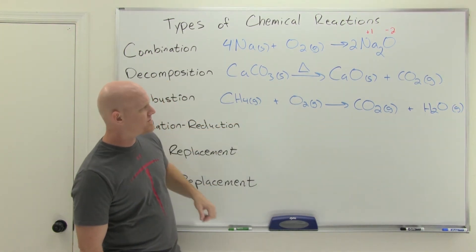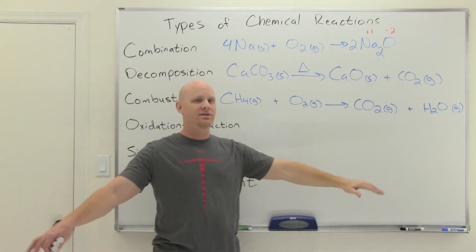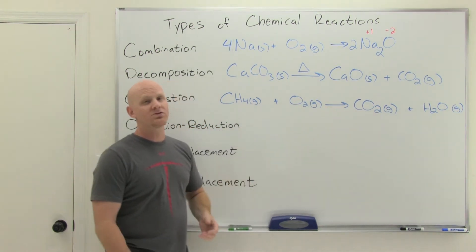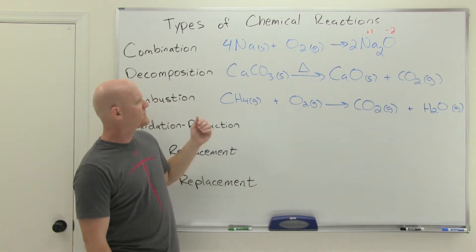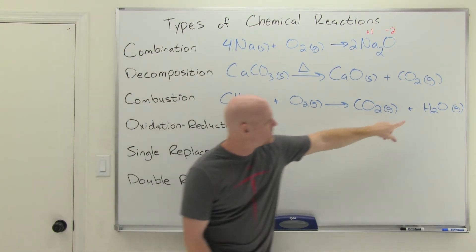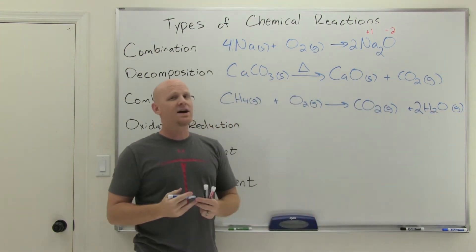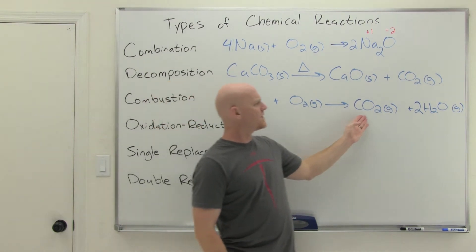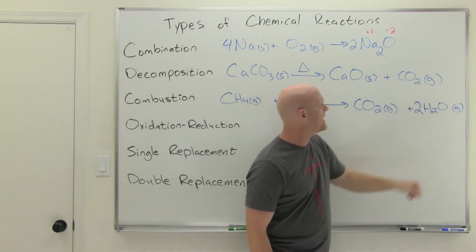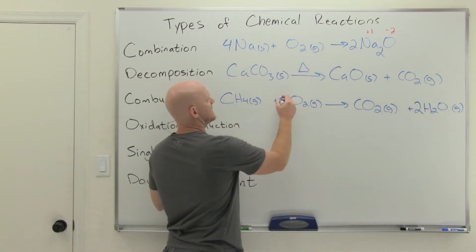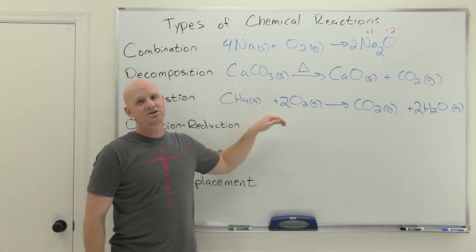When balancing combustion, oxygen shows up in two places on the product side, so it should be the last thing you balance. Balance carbon first — one on each side, done. Then do the hydrogens: we've got four here and two here, so put a coefficient of 2 in front of H2O. Now balance oxygens: we've got two O atoms from CO2 and two more from 2 H2O for a total of four, so put a coefficient of 2 in front of O2. Now we have a balanced combustion reaction.